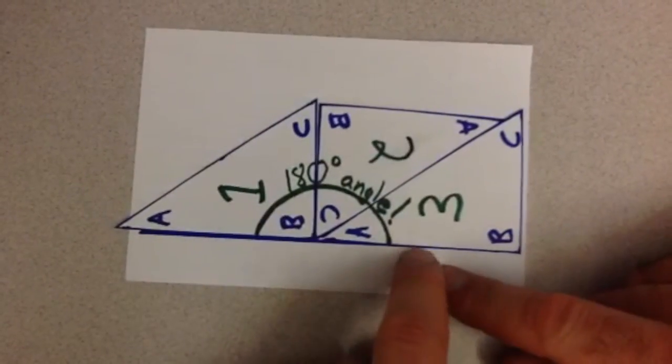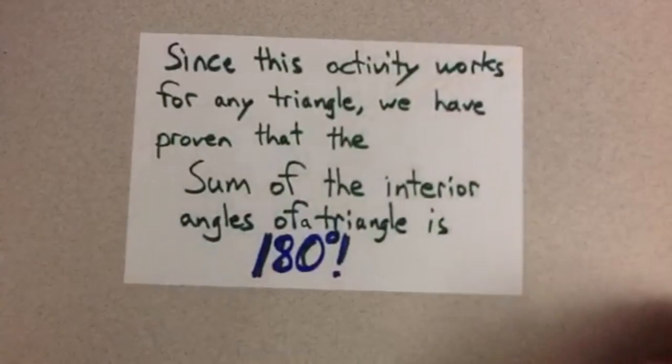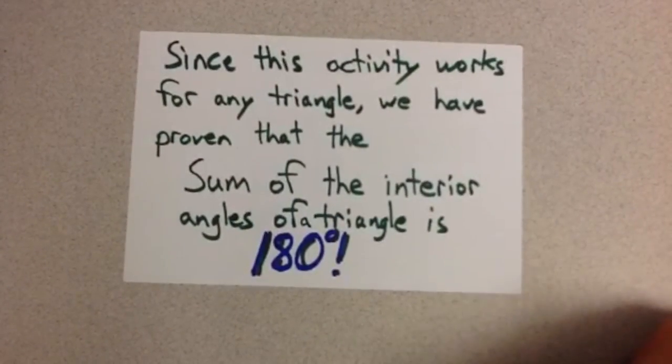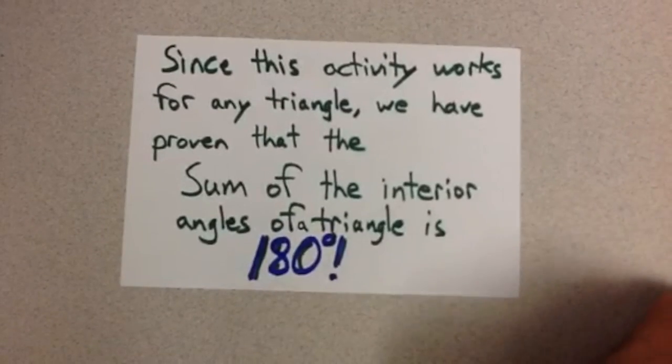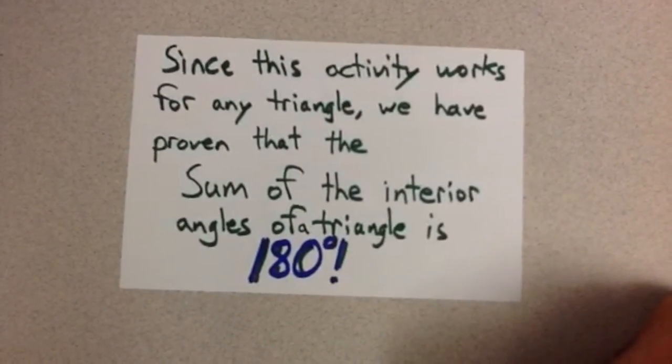So since this activity works for any triangle, we have proven that the sum of the interior angles of a triangle is 180 degrees.